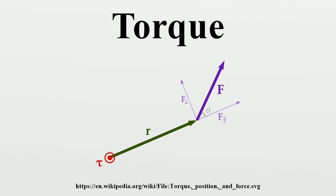When the net force on the system is zero, the torque measured from any point in space is the same. For example, the torque on a current-carrying loop in a uniform magnetic field is the same regardless of your point of reference. If the net force is not zero, and τ₁ is the torque measured from point 1, then the torque measured from point 2 differs accordingly.